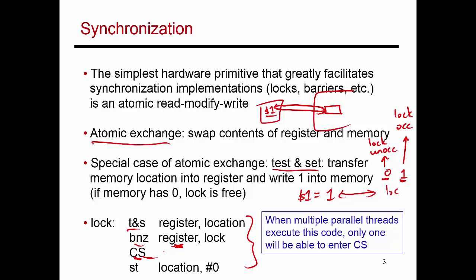Once I'm done with the critical section, to release the lock, all I need to do is store a value of 0 into that memory location. That lets others attempting a test and set observe that they have now acquired the lock. If the register value turns out to be 1, it means the lock was already occupied and I can't enter the critical section, so I loop back and try again. That's what this branch does — if the register value is non-zero, branch back and attempt the test and set again. With this relatively simple instruction and piece of code, I've implemented a lock and unlock operation.